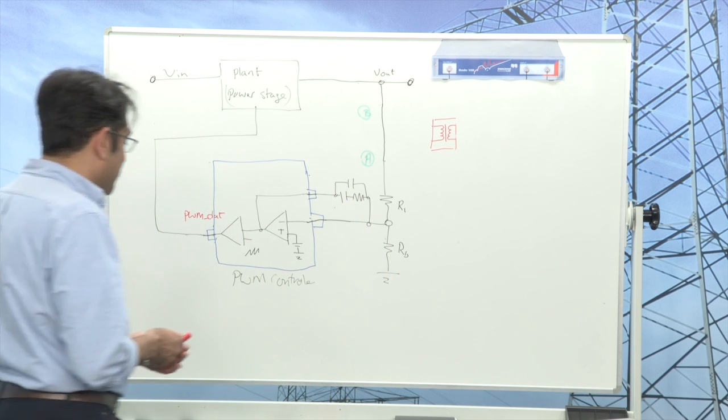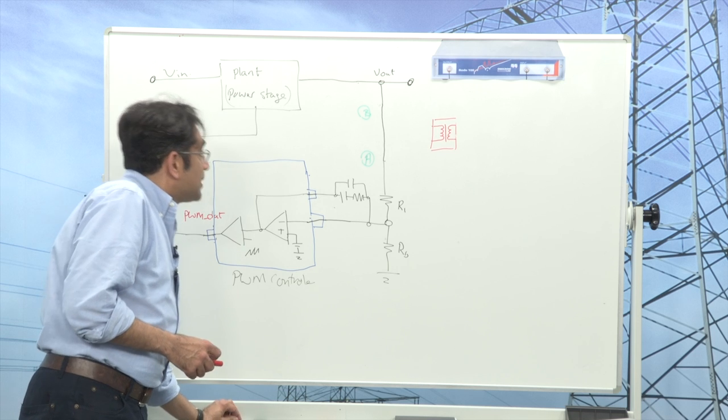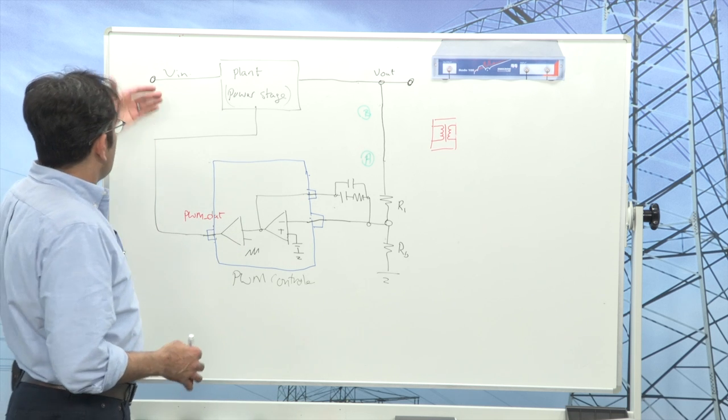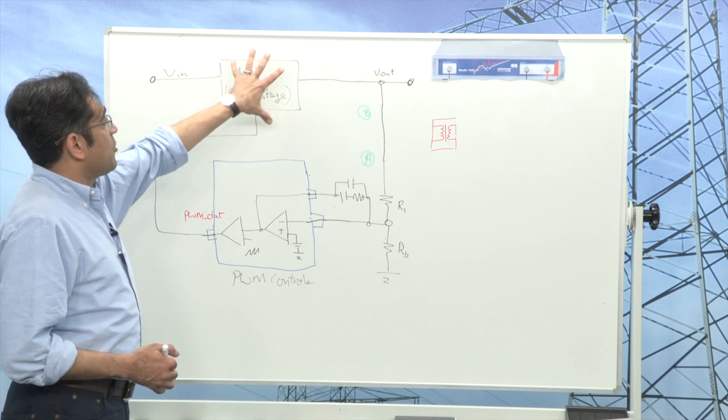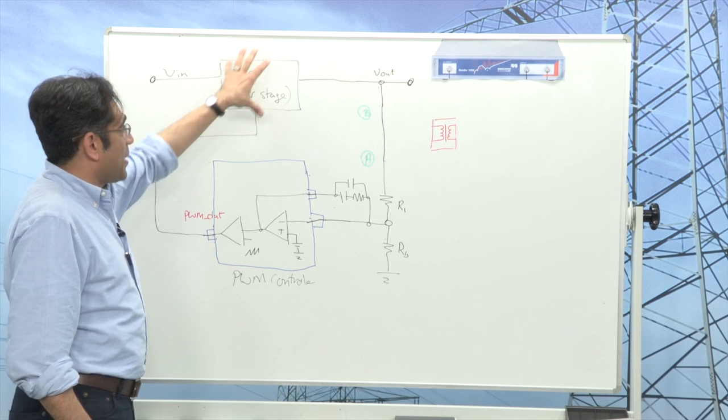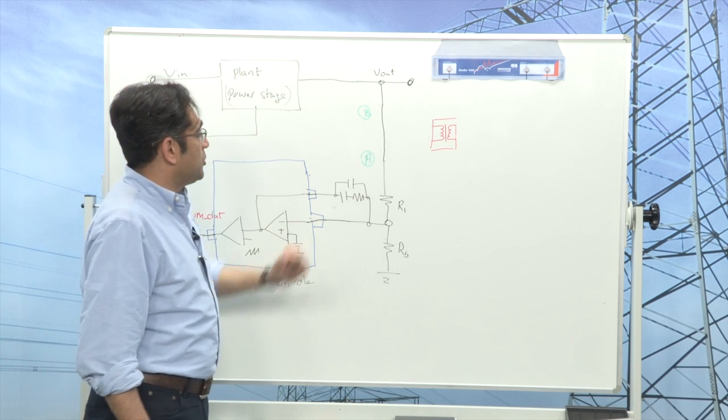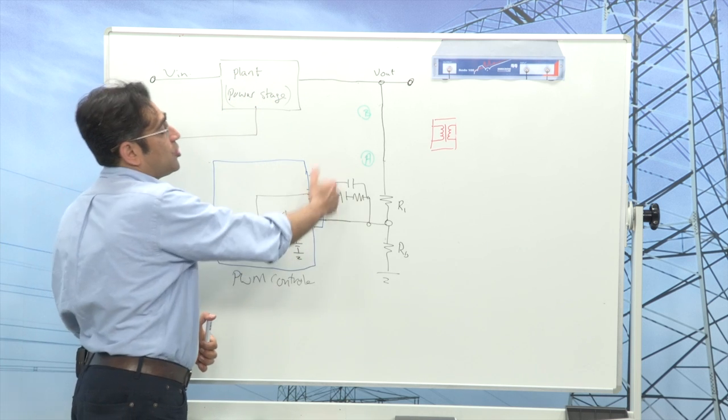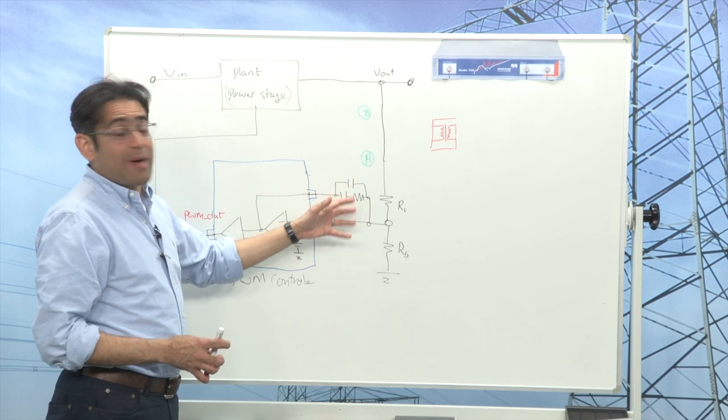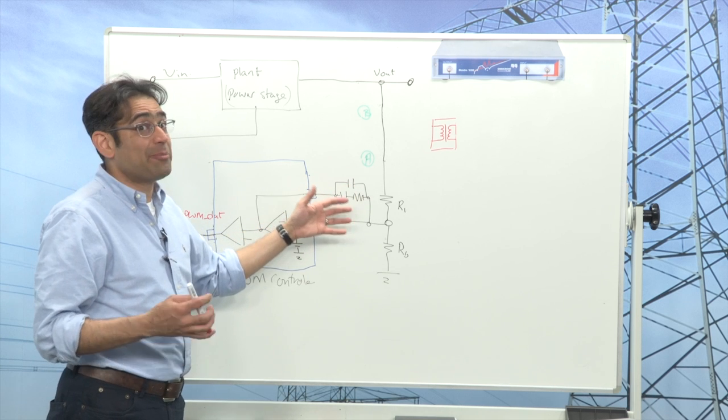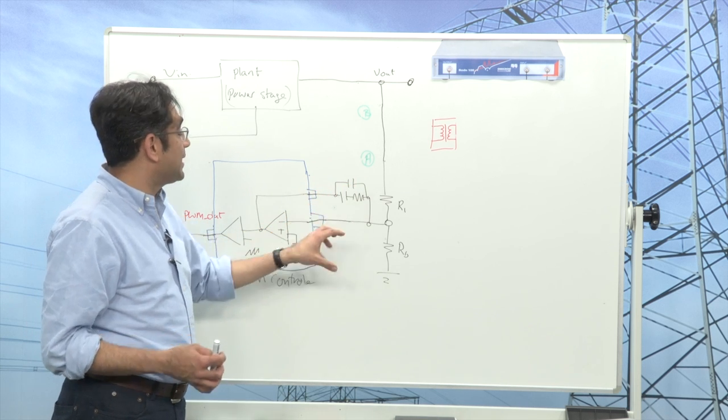So here I have drawn a picture of what the system is going to actually look like. We have got an input voltage, we have got a power stage, we've got our plant and we've got an output voltage. Then that typically goes through some compensation in analog. In a digital power supply that will be in the code, but in fact the measurement strategy will be exactly the same.